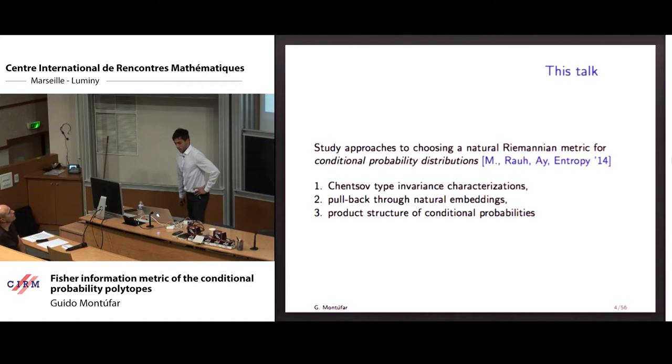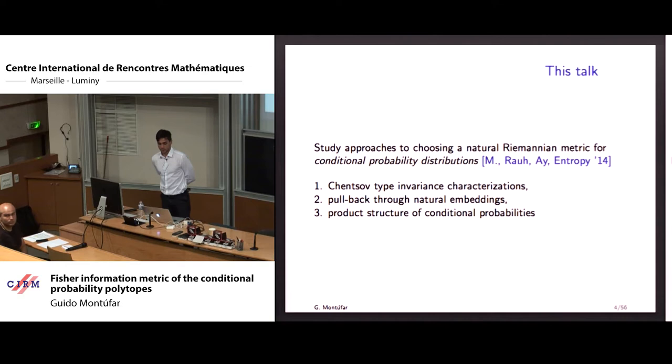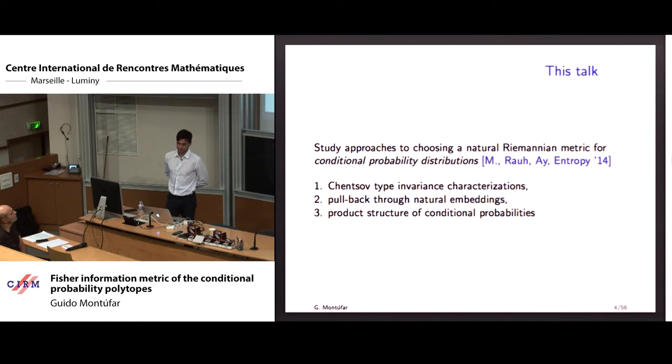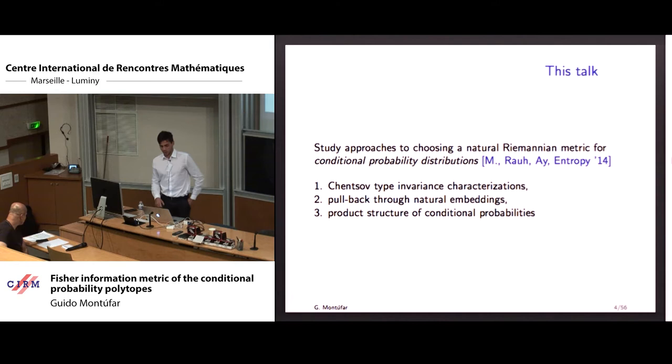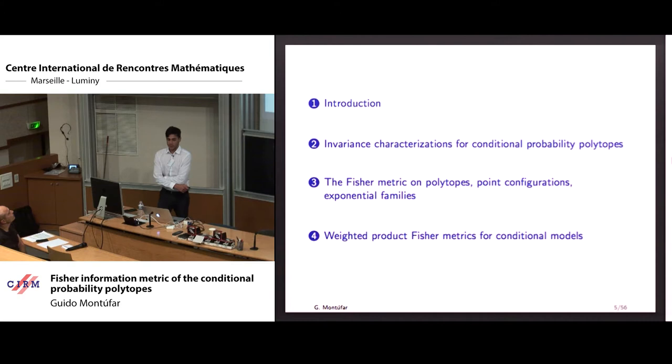This talk is about studying approaches to choosing a natural Riemannian metric for conditional probability distributions. In particular, I want to consider three approaches: one is the classical invariance characterization à la Chentsov; the next is a pullback through a natural embedding of conditional probabilities in a probability simplex; and the third is a more direct one where conditional probabilities consist of several probability distributions, so we use some kind of product structure.